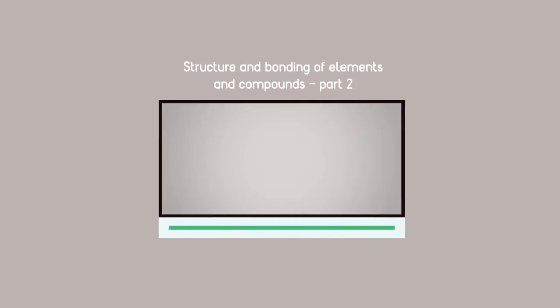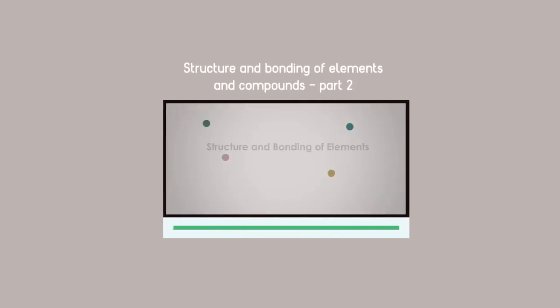By considering the reaction between pairs of elements like this, we will show in part 2 of this video that there are only 4 types of bonding possible.